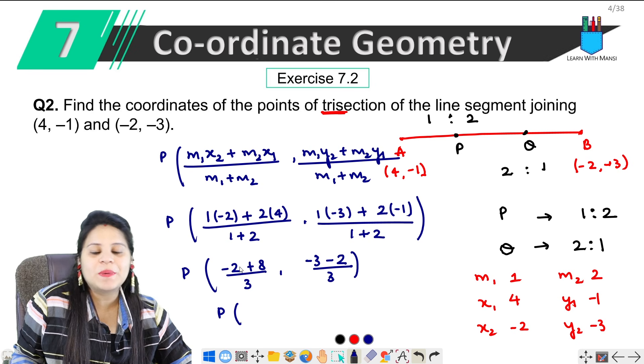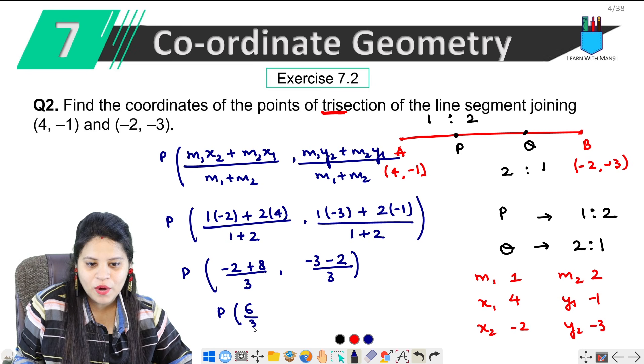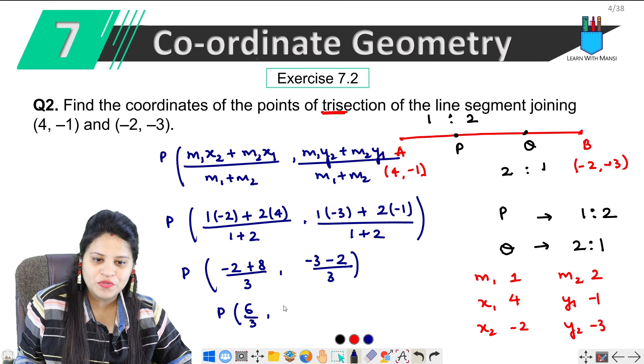So P ke coordinates kya hai? Dekho, plus minus, minus. 8 - 2 is 6, upon 3. So this is 2. Minus, minus. Plus 3. -3 + -2 is -5, upon 3.